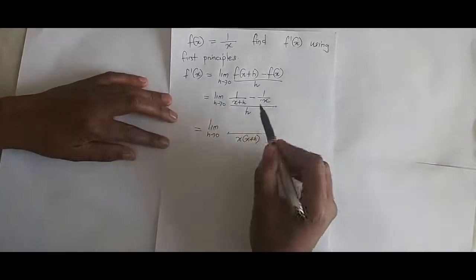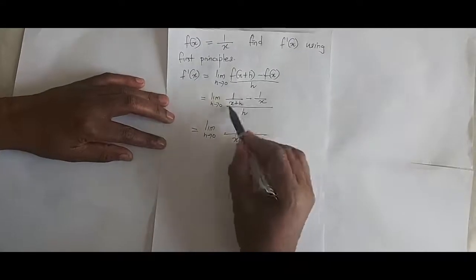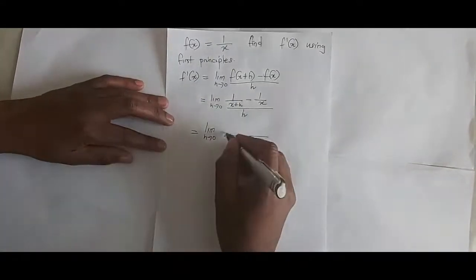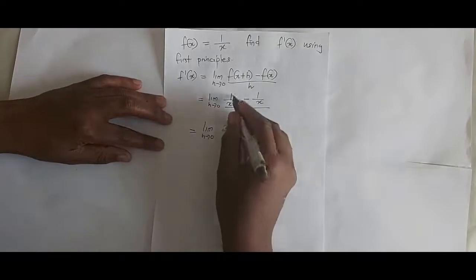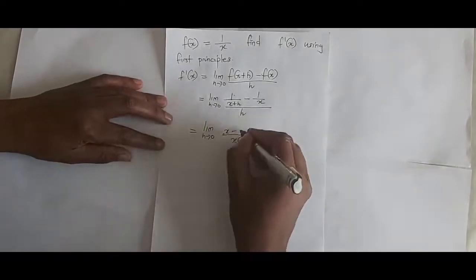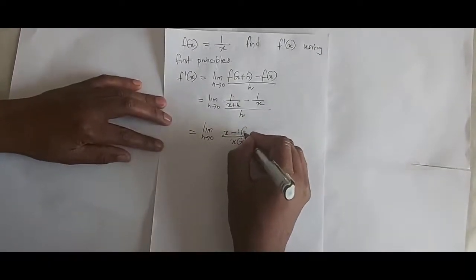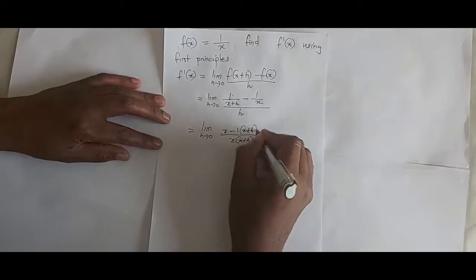Then from there I cross multiply, which means it will be x minus 1 into x plus h.